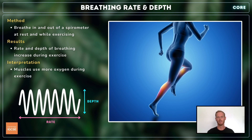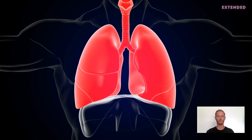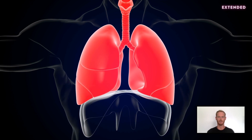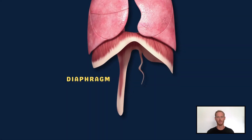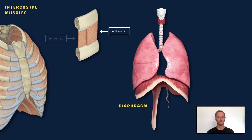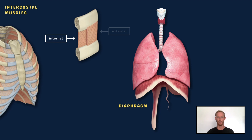Moving on to the extended section, beginning with the roles of the respiratory muscles in pulmonary ventilation. The respiratory muscles are the diaphragm, a muscular sheet that sits below the lungs, and the intercostal muscles that move the ribcage. The external intercostals contract to pull the ribs upwards and outwards, while the internal intercostals contract to pull them downwards and inwards.